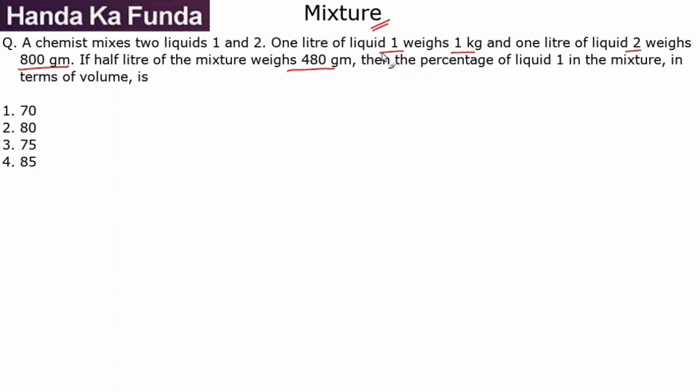What are we mixing? We are mixing liquid 1 and liquid 2. What is the weight of liquid 1? It is 1 kg per liter, or 1000 grams in 1 liter. What is the weight of liquid 2? Liquid 2 is 800 grams in 1 liter. And they are mixing to form a mixture which is 480 grams in half liter.